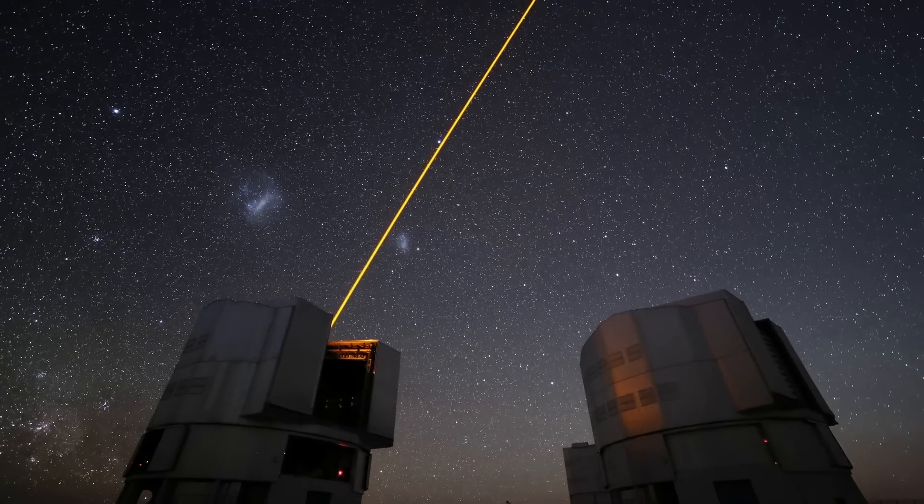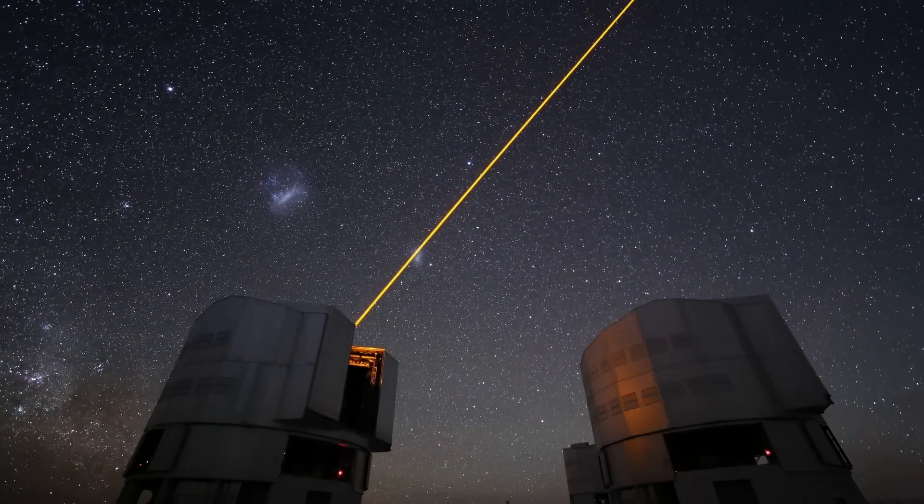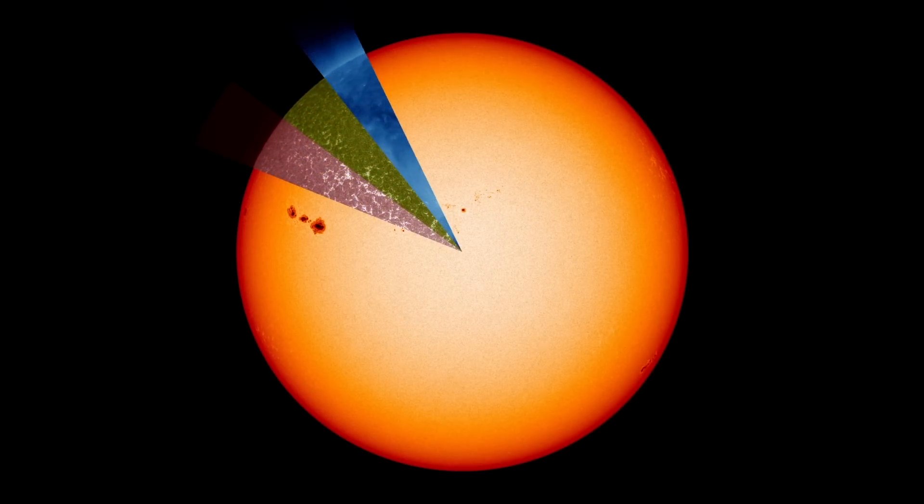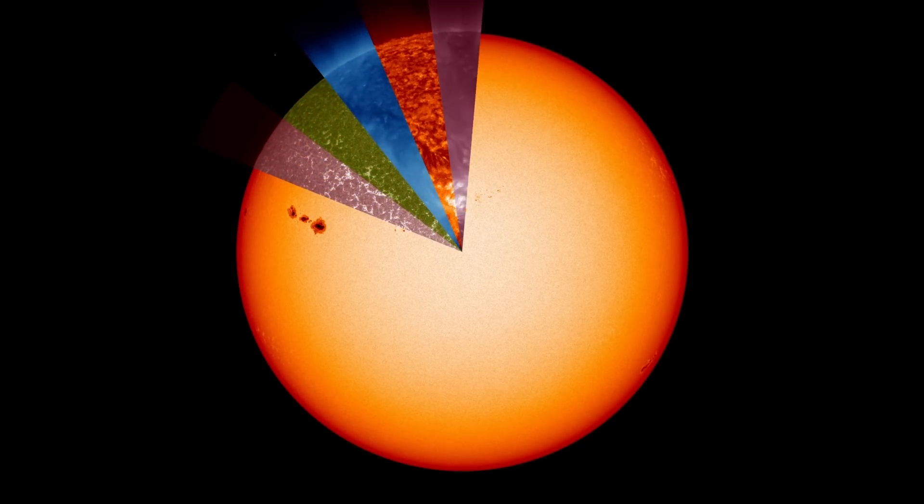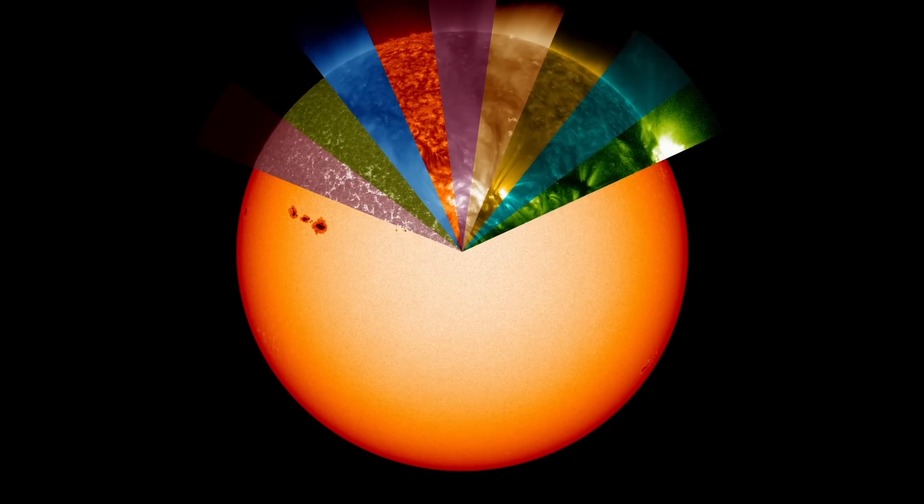We use as big telescopes as we can to get as much light as we can. When you have a lot of light, you can break the light down into very narrow color bands, and so you can get a lot more information out of it.